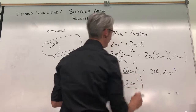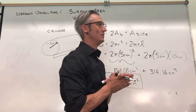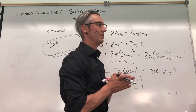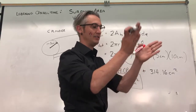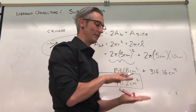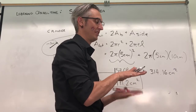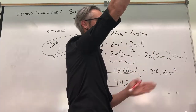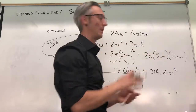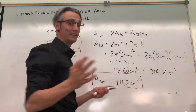Rounding to one decimal place, the total area is 471.2 centimeters squared. It's important not to round your numbers too early, because the error propagates — it gets bigger as you go, just like an airplane that starts off course gets further and further from where it should be. That's the only reason. And that's how you do cylinders.